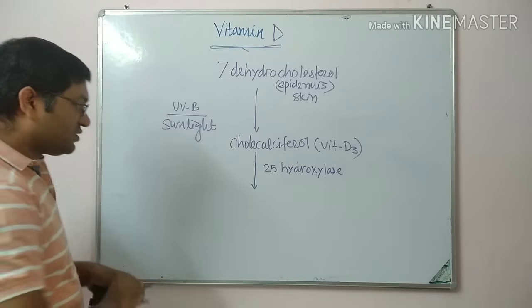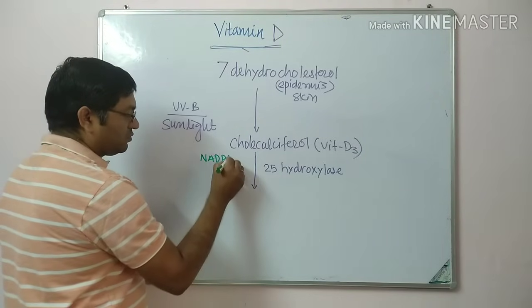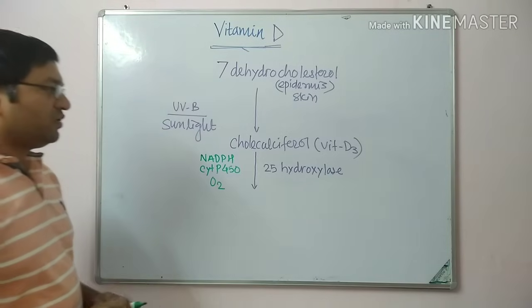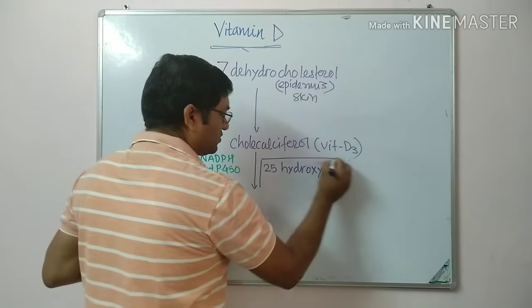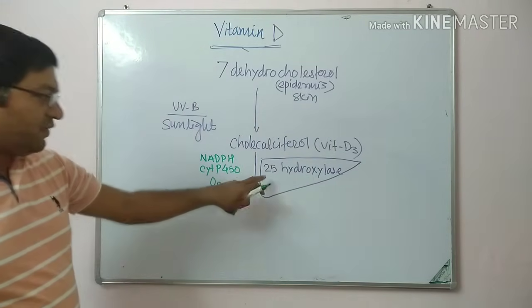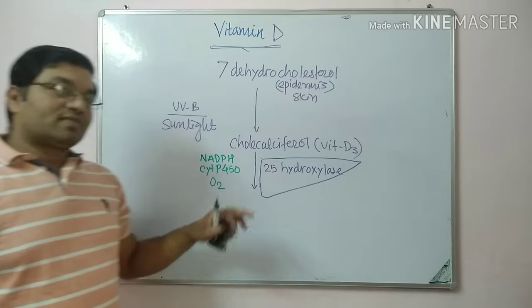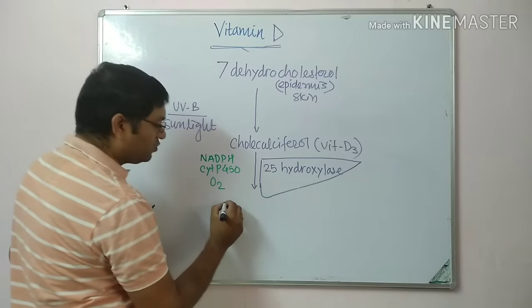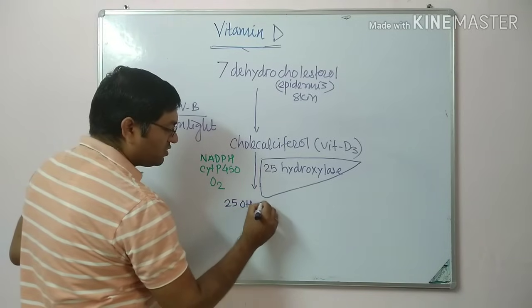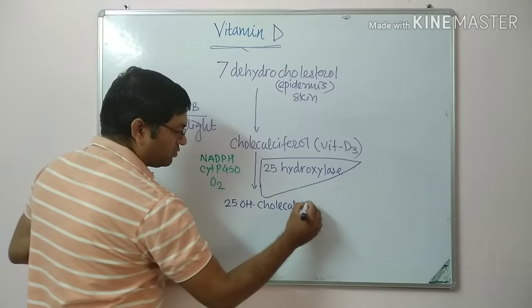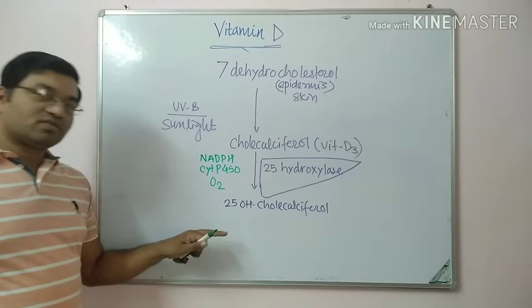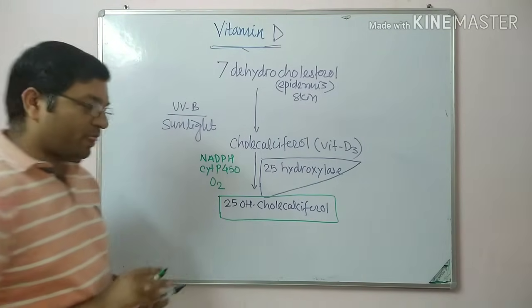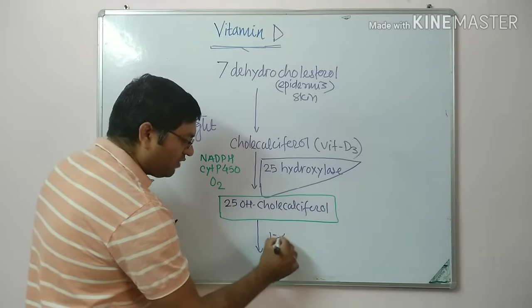The 25-hydroxylase reaction requires NADPH, cytochrome P450 system, and oxygen. This 25-hydroxylase enzyme is present in the liver — the larger number 25 corresponds to the liver, while number 1 corresponds to the kidney. By the 25-hydroxylase reaction, cholecalciferol is converted into 25-hydroxycholecalciferol, which is the major circulatory and storage form of vitamin D.